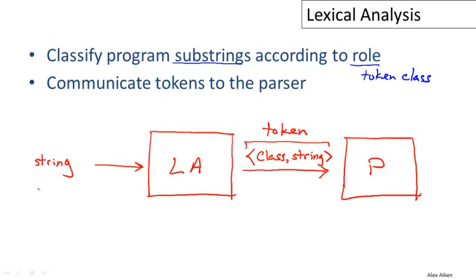For example, if my string is foo equals 42, then that will go through the lexical analyzer, and out will come—I'll write down here—three tokens. These would be identifier foo...